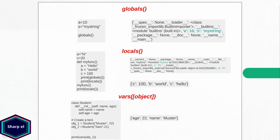Now let's move to the next built-in functions: globals, locals, and vars. A Python program has various namespaces. Suppose you define a variable a in the main and another variable a in a function. The variable a in main is a global variable and the variable a in the function is a local variable. Keep in mind that in Python, variables are actually object references. The built-in function globals returns all the variables from the global namespace as a dictionary, whereas the built-in function locals returns all the variables from the current namespace as a dictionary.